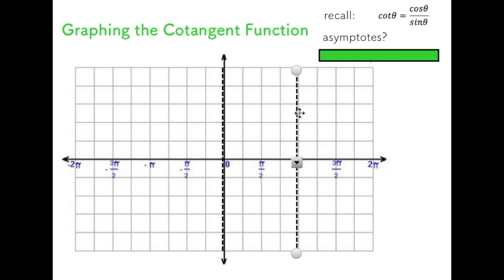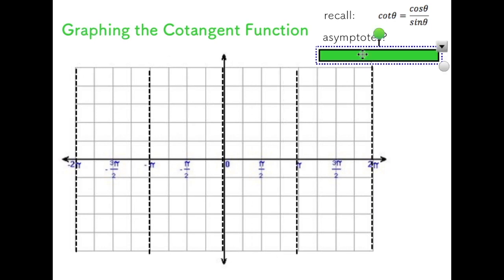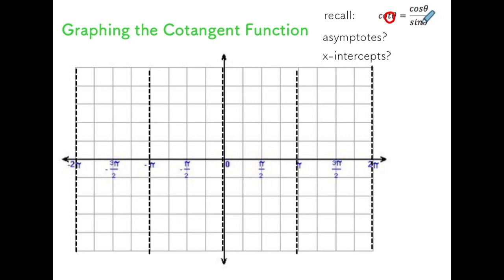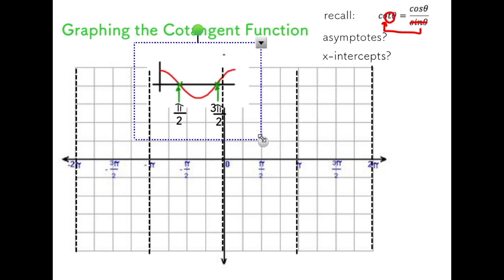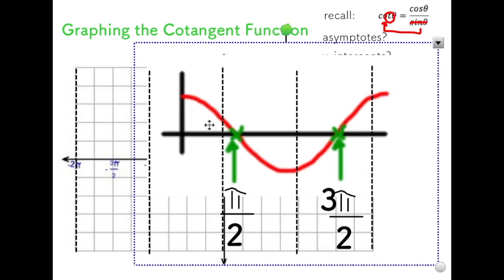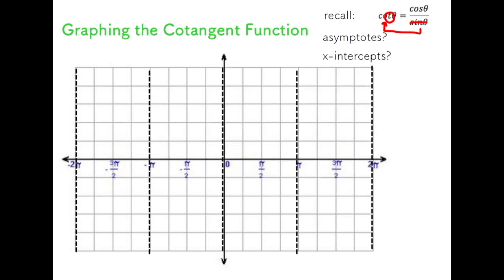Next, if I consider the x-intercepts, just like all the other functions, I'm going to set the entire thing equal to zero and solve for a value that makes this true. Multiplying sine up to the other side gives me the equation cos of theta equals zero. So wherever cos of theta equals zero, I'm going to have x-intercepts. The graph of cos theta has x-intercepts at pi over two and three pi over two, so my cotangent graph also has x-intercepts at pi over two, three pi over two, negative pi over two, negative three pi over two, and so on.